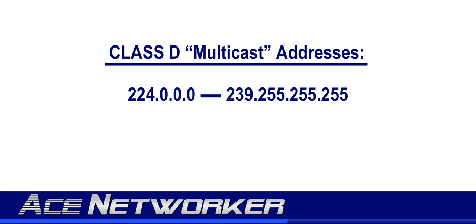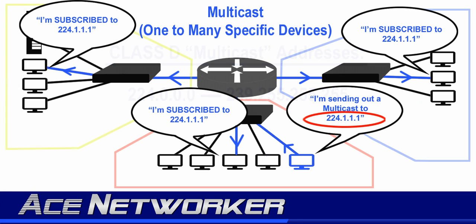This is where you'll encounter Class D multicast addresses in classful IP addressing. This range starts at 224.0.0.0 and goes all the way to 239.255.255.255. Future videos will cover multicasting in more detail.